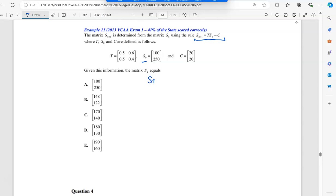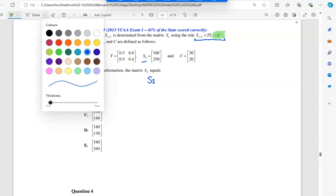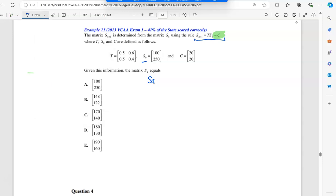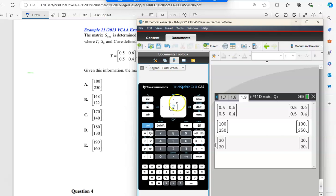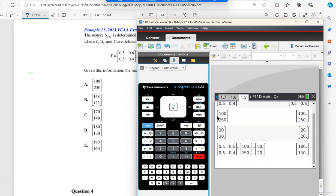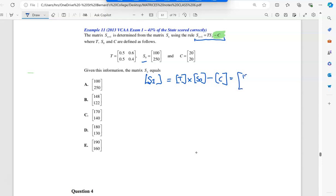You remember when we have this extra bit here, we must do it recursively, which means step by step. So we're going to go S_1. We're going to do the transition times S_0 minus C and we'll get an answer. So I'm going to do this on the calculator. So the transition times S_0 and then we're doing minus the C. If we put that in there and we press enter, we get 180, 130.